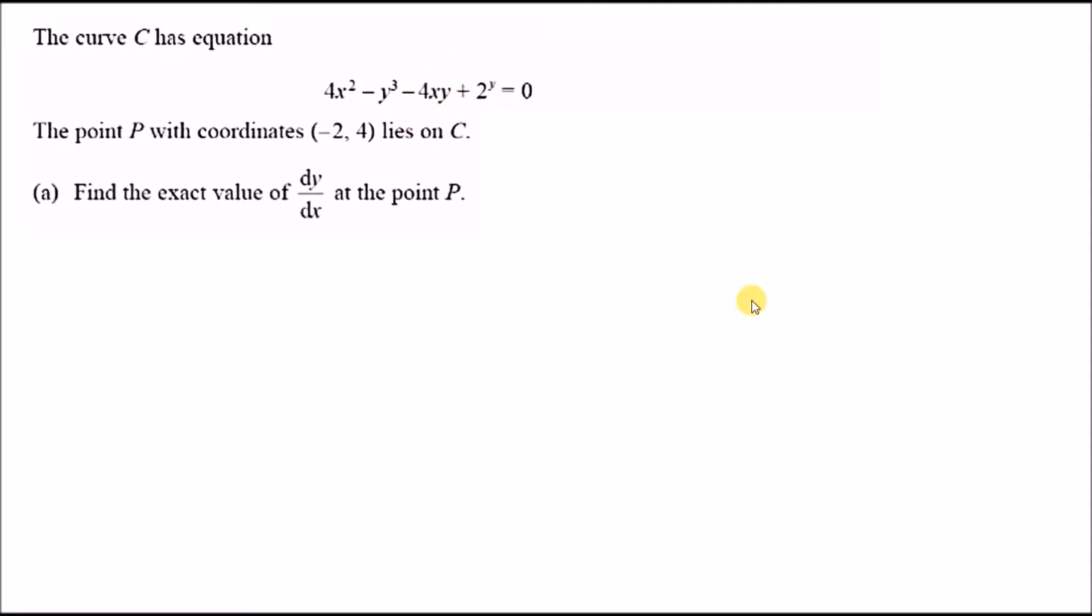How do we differentiate this entire equation? Most of it should be pretty okay. The key idea is that when you differentiate an x term, you do it as normal because we're differentiating with respect to x. When you differentiate y, we're going to look at exactly what happens there, step by step for each term.